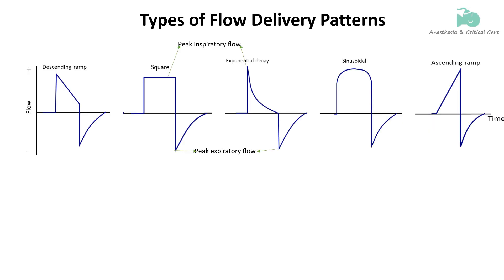Flow rate plays a crucial role in determining how gas is delivered to the lungs during mechanical ventilation. Ventilators can deliver gas in different flow waveforms, represented on the ventilator as a flow-time waveform. When flow is directed into the lungs during inspiration, it is plotted as a positive value. When the patient exhales, flow reverses direction and is plotted as a negative value. The expiratory flow is usually passive and the same for all waveform types, with a gradual decline to zero before the next breath.